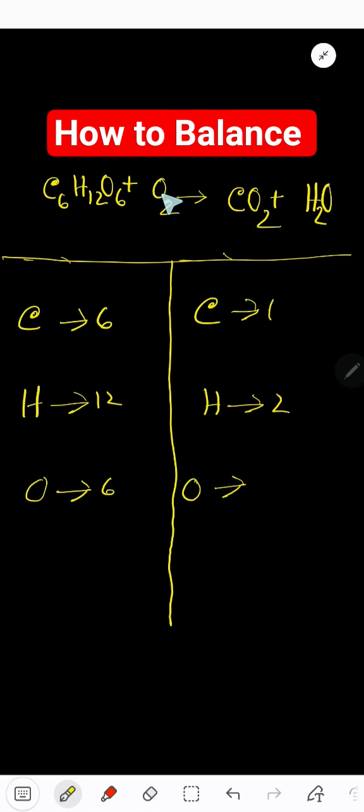Here we have 2 more oxygen, so add here 2, that gives you totally 8. On the right hand side carbon 1, oxygen is 2, then hydrogen 2, here we have 1 more oxygen, so totally we have 3 oxygen on the right hand side.